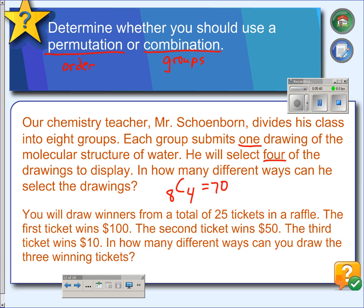In the second example, you would draw winners from a total of 25 tickets in a raffle. First place gets $100, second place gets $50, and third place gets $10. In this case,